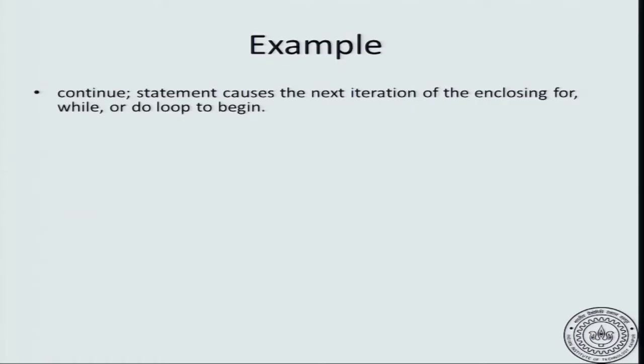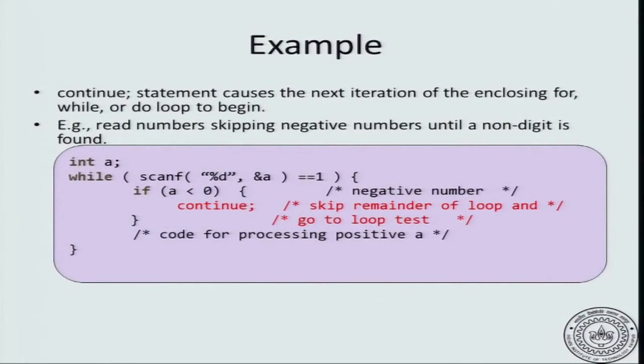Continue statement causes the next iteration of the closest enclosing for, while, or do while loop. Let us motivate it with a very simple example. Let us say that we are reading numbers coming in a stream and what we have to do is to skip the negative numbers.